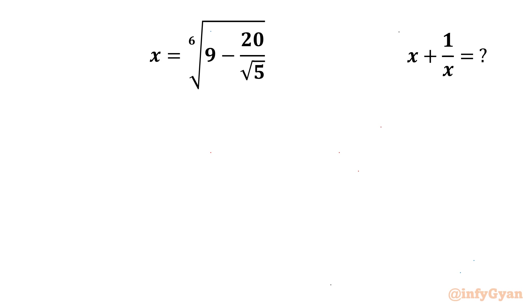Welcome back to Infigyan, my dear friends. In today's video we have got one very interesting question from Radical Mathematics. We have to evaluate the expression x plus 1 over x, given x is the 6th root of 9 minus 20 over square root 5. Let's get started by considering the unknown expression, which I will call E.